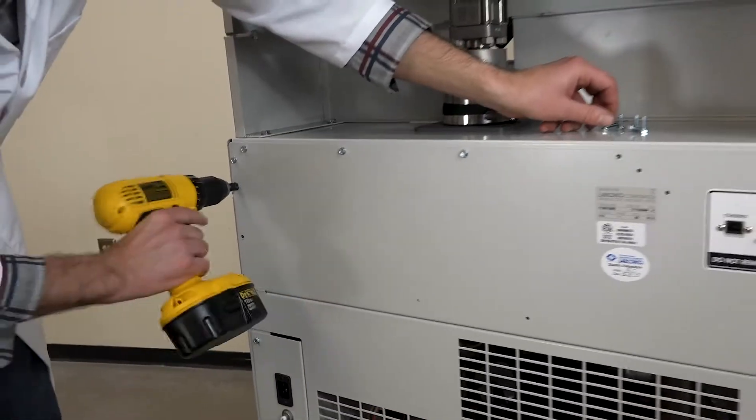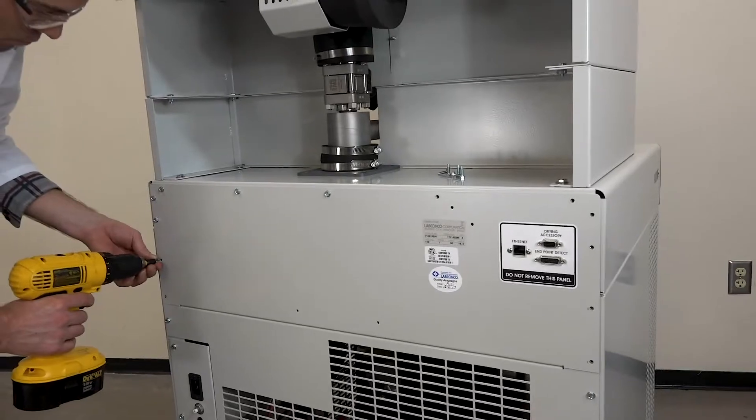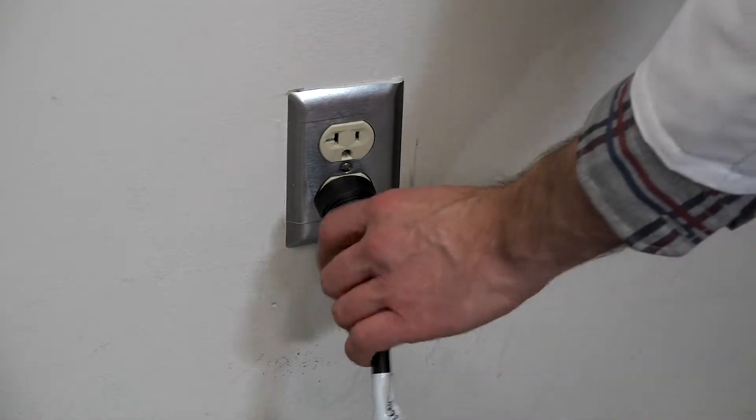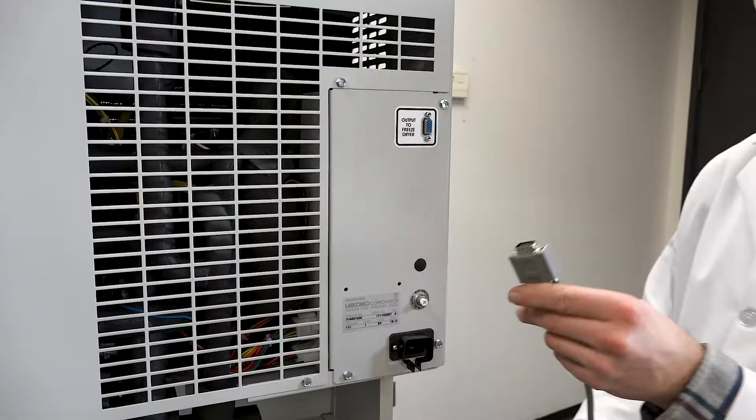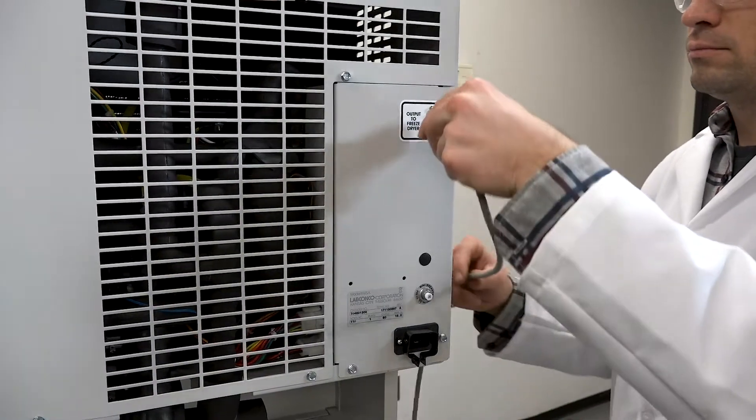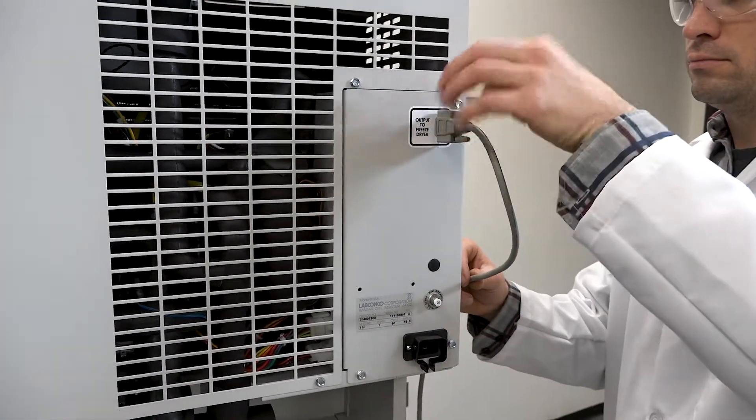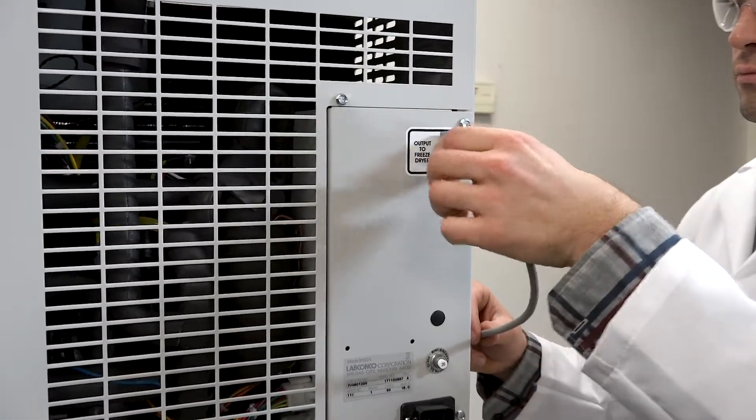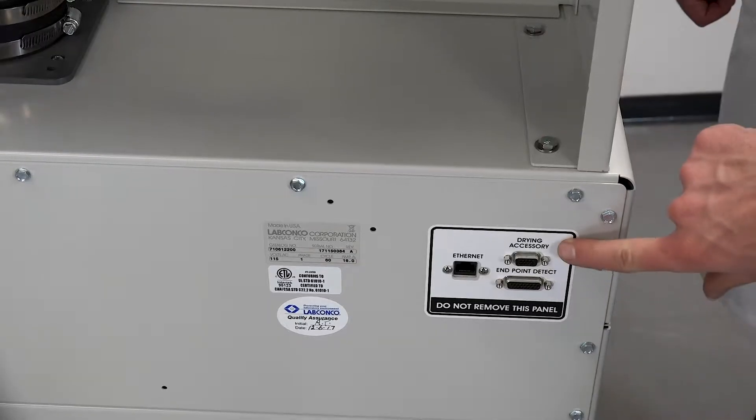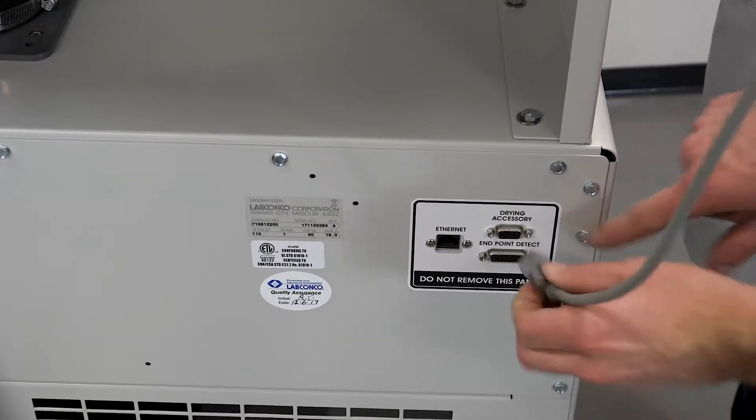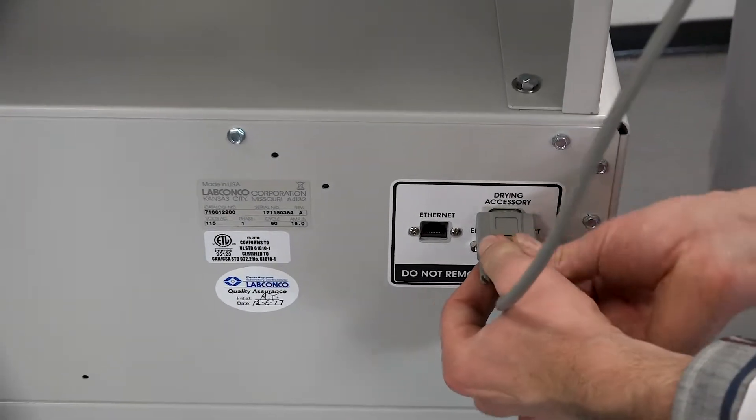Make sure the stopper and tray dryer and FreeZone console power cords are unplugged before connecting the communication cable. Connect one end of the communication cable to the port on the back of the stopper and tray dryer labeled output to freeze dryer. Connect the other end to the port on the back of the freeze dryer labeled drying accessory.